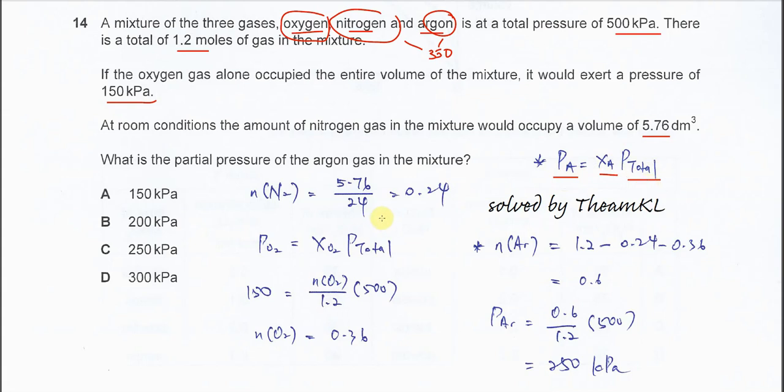Let's start with how to get the partial pressure of argon. First, let's get the moles of nitrogen. We use 5.76 divided by 24, the molar volume. The moles of nitrogen in the mixture is 0.24.